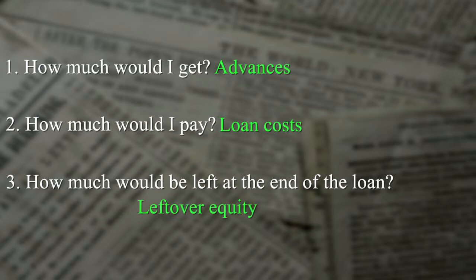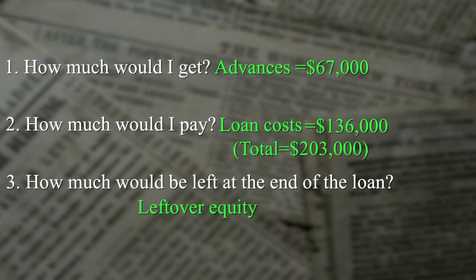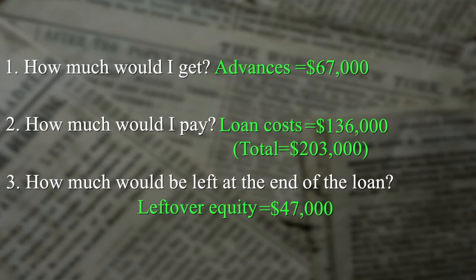Let's look at Mary's situation. She got paid a sixty-seven thousand dollar loan. She'll have to pay one hundred thirty-six thousand dollars back, plus the amount she was loaned — sixty-seven thousand dollars — for a grand total of two hundred three thousand dollars. If Mary sells her house for two hundred fifty thousand dollars to pay back the loan, she'll have approximately forty-seven thousand dollars left. If her house has increased in value, she'll have more. Regardless, she used up a large portion of her home equity on the reverse mortgage.